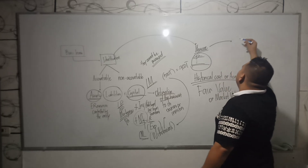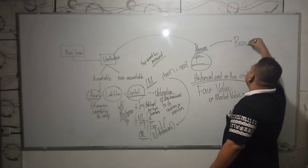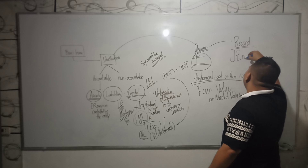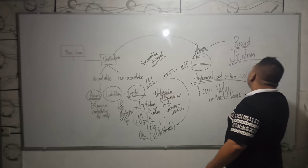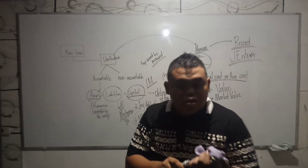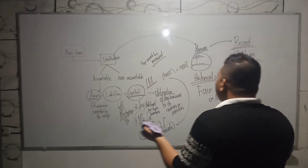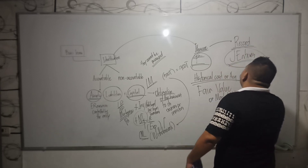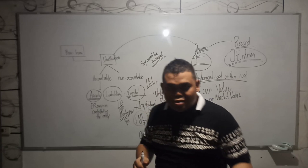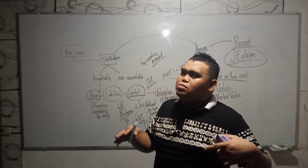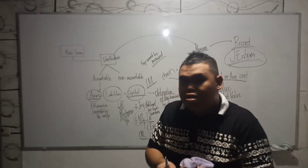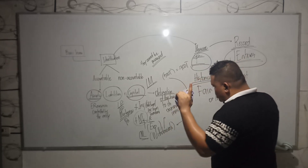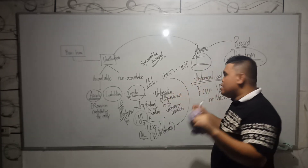After measuring, you have to record. Those are journal entries and we'll go to that in the next sessions. You have identified, you have measured, and now you have to record. I will not give more details about journal entries yet so you won't be confused. Just think of recording like writing in a diary. After that, you have to classify your records.